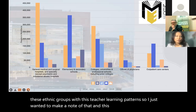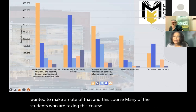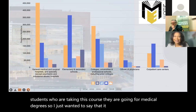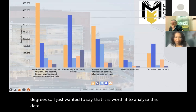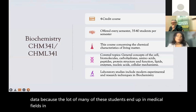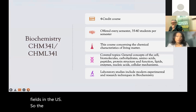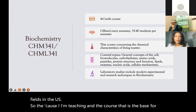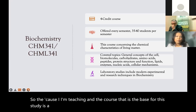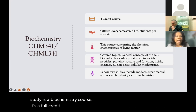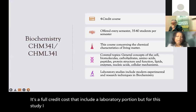Many students taking this course are pursuing medical degrees, so it is worthwhile to analyze this data, as many end up in medical fields in the U.S. The course I'm teaching — which forms the basis of this study — is a four-credit biochemistry course that includes a laboratory portion, though for this study I'm only using the lecture portion.